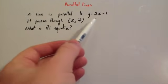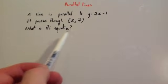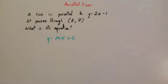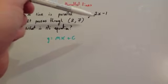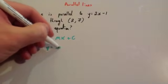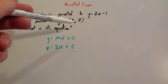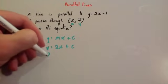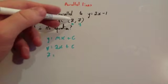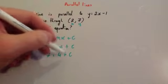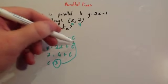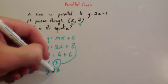A line is parallel to Y equals 2X minus 1. It passes through (2, 7). What is its equation? The equation will be in the form Y equals MX plus C. Since it's parallel to Y equals 2X minus 1, the gradient must be 2. So you get Y equals 2X plus C. This time the coordinate is not on the Y-axis, so we substitute it in. Y is 7 and X is 2, giving 7 equals 2 times 2 plus C, so 7 equals 4 plus C, meaning C equals 3. Therefore the equation is Y equals 2X plus 3.